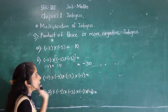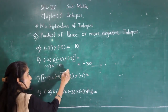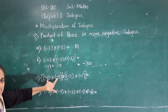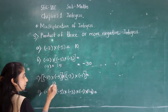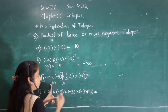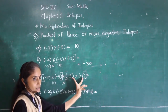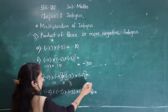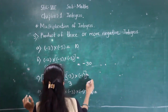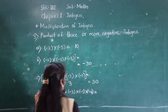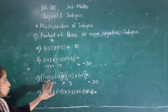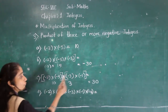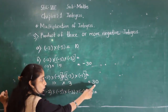Now for 4 negative integers: we make groups of 2 negative integers. Product of 2 negative integers is always positive — so 2 fives are 10, positive 10. Then minus 3 into minus 4: product of 2 negative integers is positive, so 3 fours are 12. Then 10 times 12 equals 120. Wait — so the answer for 4 negative integers is positive: 30. Product of 4 negative integers gives a positive integer.